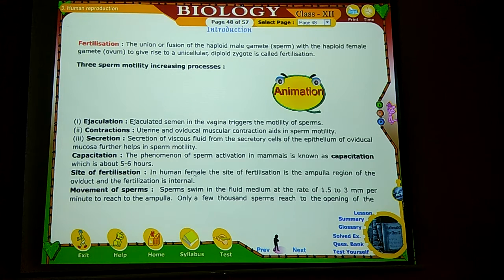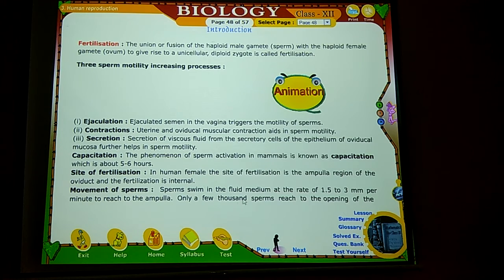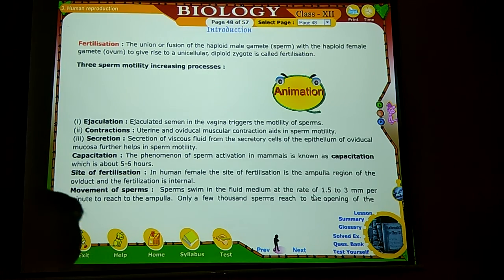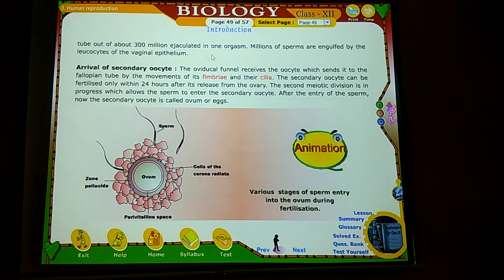First, the site of fertilization — in the human female, the site of fertilization is the ampulla region of the oviduct. Movement of sperm — sperm swim in the fluid medium at the rate of 1.5 to 3 mm per minute to reach the ampulla. Only a few thousand sperms reach the opening of the tube out of 300 million ejaculated in one ejaculation. Millions of sperms are engulfed along the way.